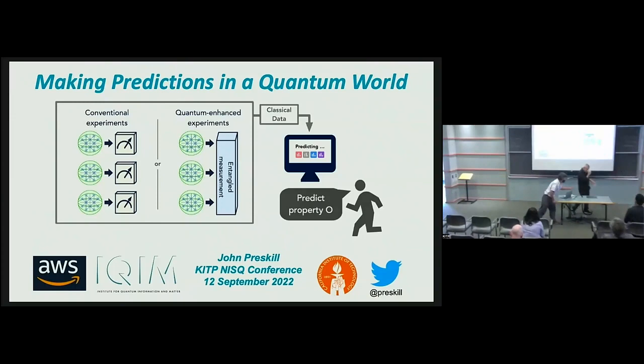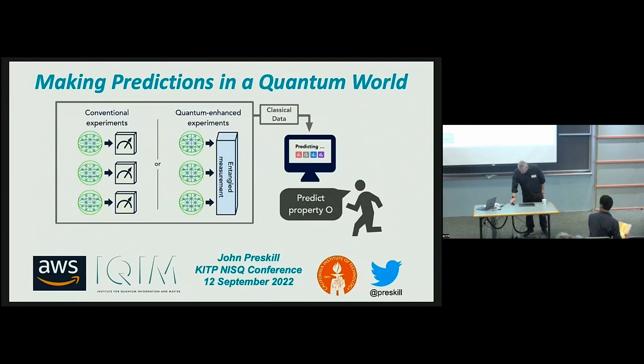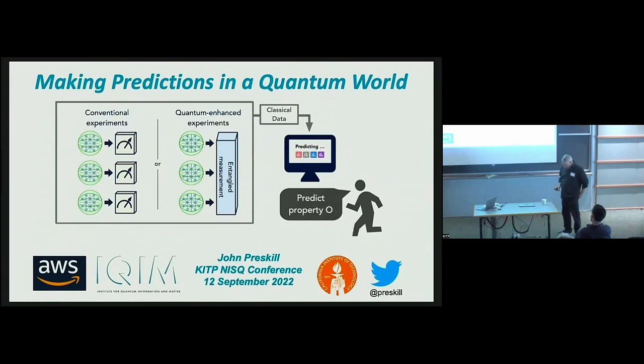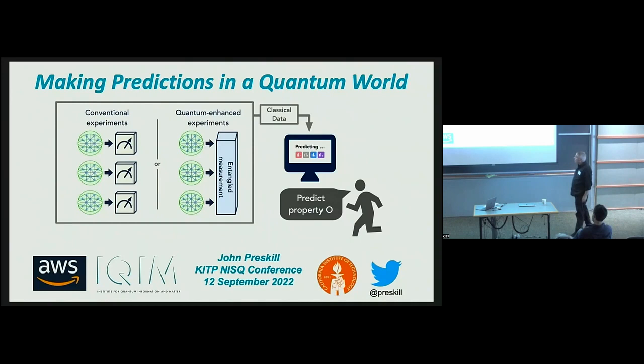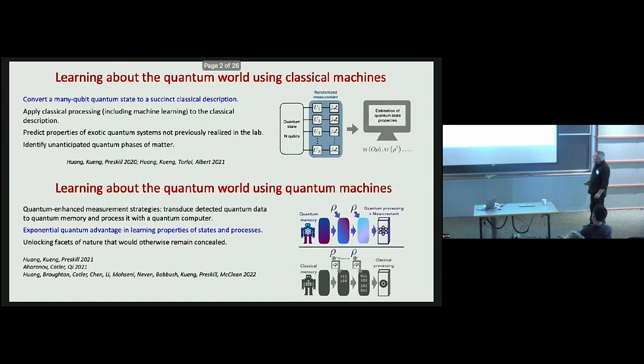I'm excited to be here and looking forward to all the things I'm going to learn this week. We live in a quantum world yet we are classical beings, and sometimes our quantum nature impedes our ability to interact with, learn from, and understand the underlying quantum reality. I want to talk about two ways we can improve our ability to learn about the quantum world: learning using classical machines and learning using quantum machines.